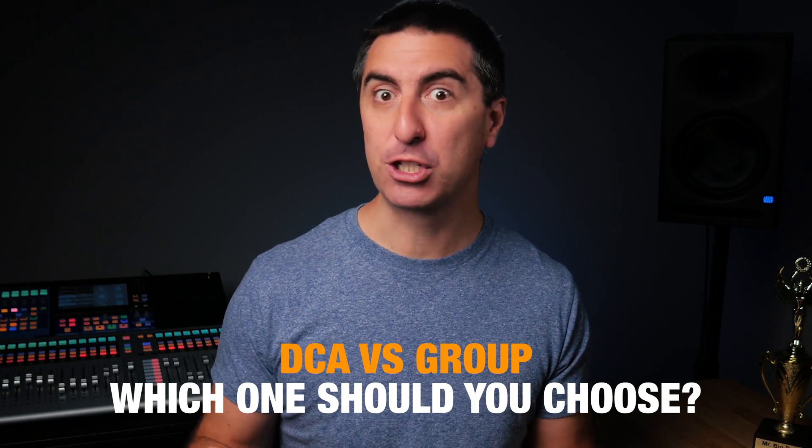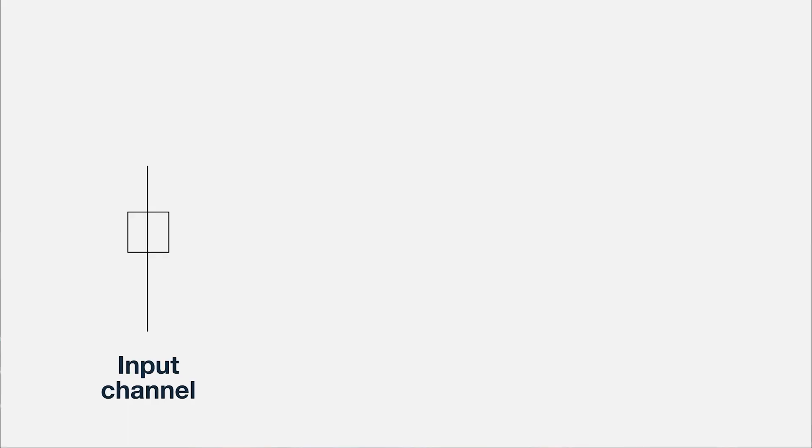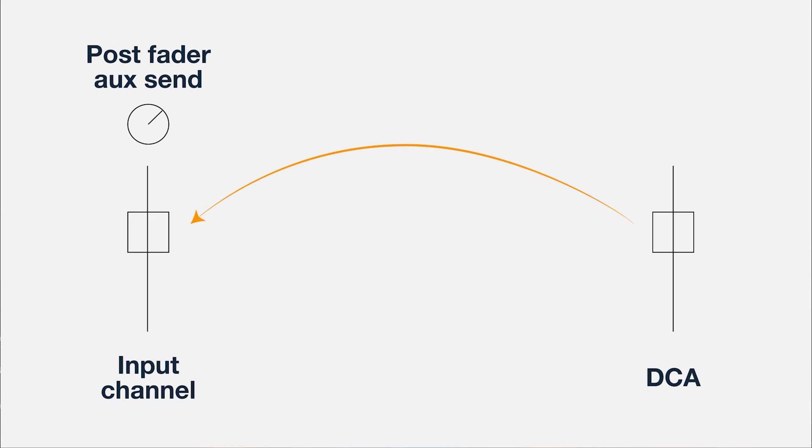So now we're back to the DCA versus group question — which one should you choose? If you have channels being sent to a post fader aux send, a DCA can be a good solution for controlling the overall level of that group of faders, because when you pull that DCA down, you're also pulling down the level going to those aux sends. However, if you're routing your input channels through a bus and making changes with compression and EQ, those changes won't be reflected on the post fader aux send. That's one reason I don't typically prefer putting my subs on an aux send — if I compress my drums and get them really punchy, that won't be reflected if the kick drum is sent to the sub before that compression happens.